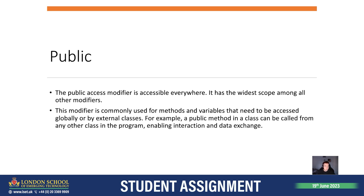The public access modifier is accessible everywhere. It has the widest scope among all of the other modifiers, so it's accessible from anywhere. This modifier is commonly used for methods and variables that need to be accessed globally or by external classes. For example, a public method in a class can be called from any other class in the program, enabling interaction and data exchange.